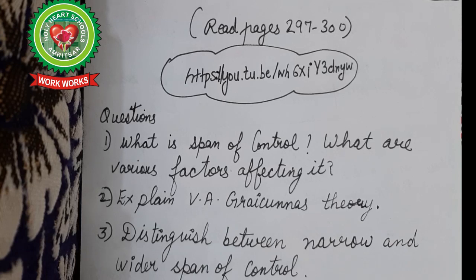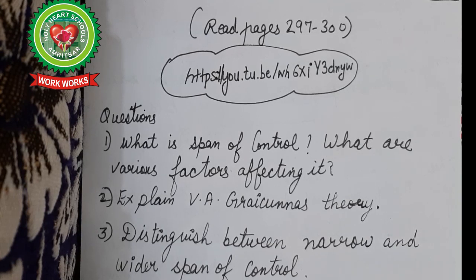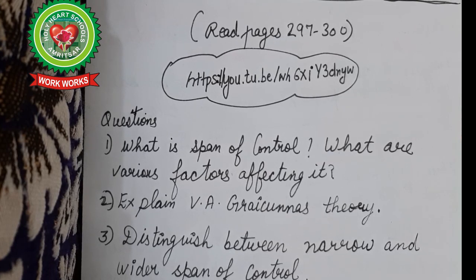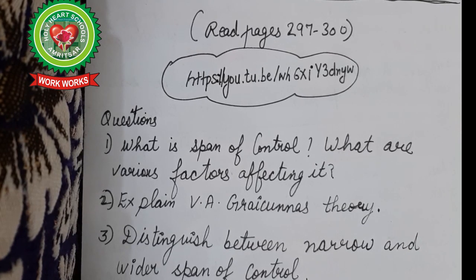Now you will all be able to answer the following questions: What is span of control? What are the various factors affecting it? Explain V.A. Graicunas' theory. Differentiate between narrow and wide span of control. The topic is almost over. Tomorrow we will start with another element of directing — motivation. Thank you.